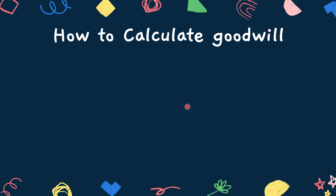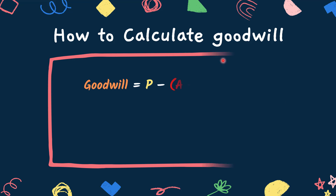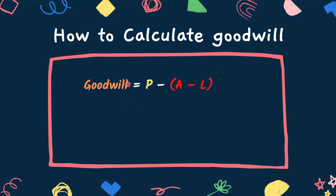How to calculate goodwill? The process for calculating goodwill is fairly straightforward in principle but can be quite complex in practice. To determine goodwill with a simple formula, take the purchase price of a company and subtract the net fair market value of identifiable assets and liabilities.